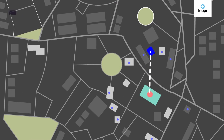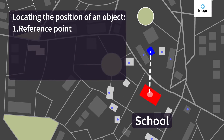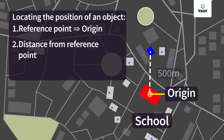So these are the three things you need to locate the position of an object. First is the reference point, which is the starting point from which you measure the distance — in science, we also call the reference point the origin. Second is the distance, that is how far an object is from the reference point. And third is the direction in which the object is from the reference point. If we change the reference point for defining the same position, the distance and direction also change.